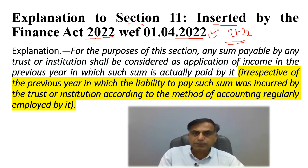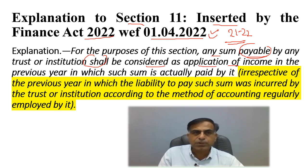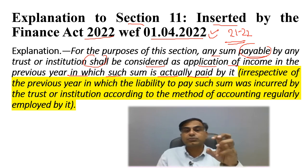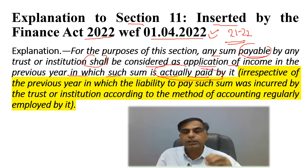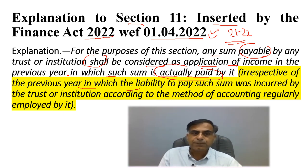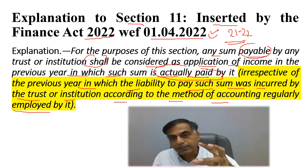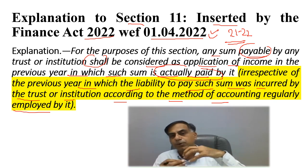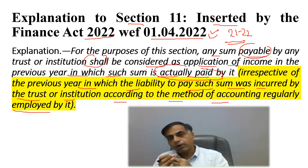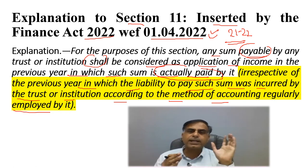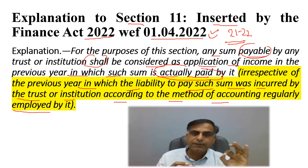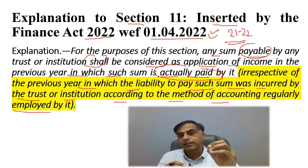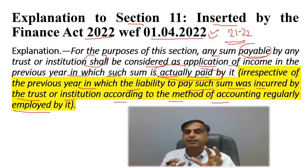The explanation states that for the purpose of this section, any sum payable by any trust or institution shall be considered as application of income in the previous year in which such sum is actually paid — irrespective of the previous year in which the liability to pay such sum was incurred according to the method of accounting regularly employed. So even if a trust follows the accrual system of accounting for booking expenses, the law specifically says that expenses will be allowed only on actual payment basis, and only when the actual payment is made will the relevant application of income be permitted in computing the final income of the trust.